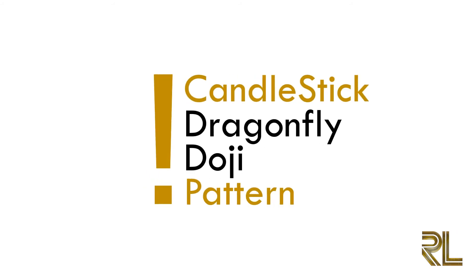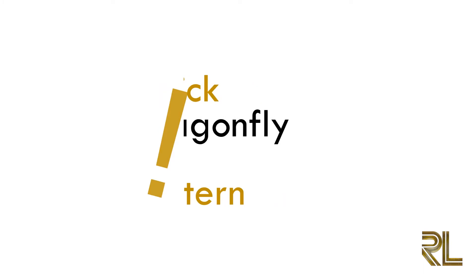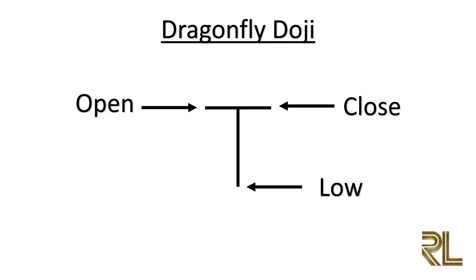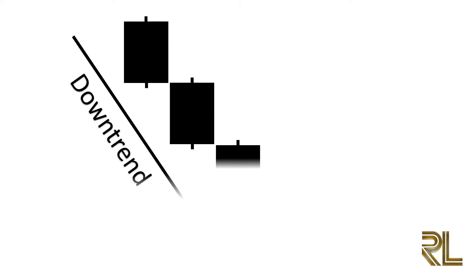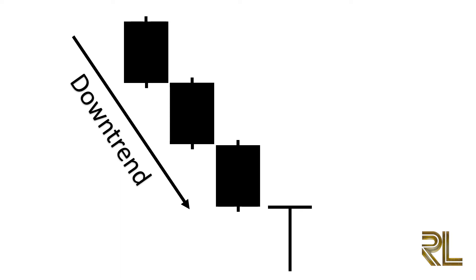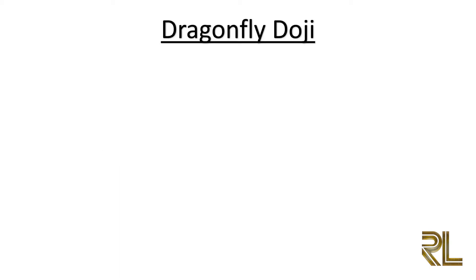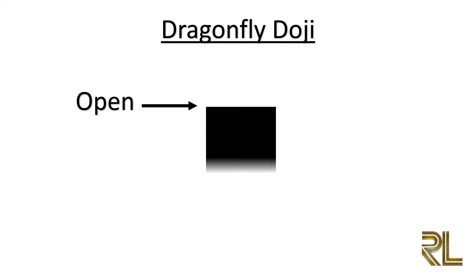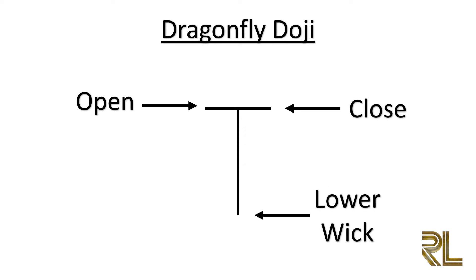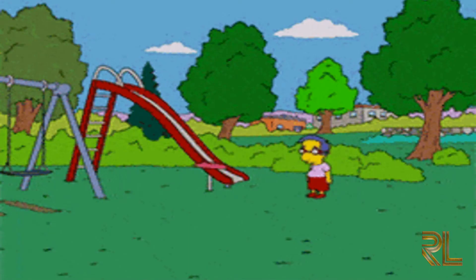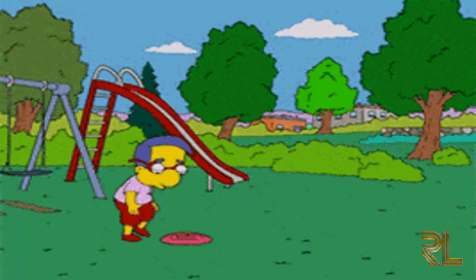The dragonfly doji is a bullish candlestick pattern, part of the doji family, formed when the open, high, and close are the same or about the same price. It's found in a preceding downtrend and looks like a T-letter with little to no real body. The psychology: the bears pull price all the way down, then the bulls push it back up to the same price where it opened. The long lower tail shows high buying pressure. This pattern helps you visually identify where support and demand are located.